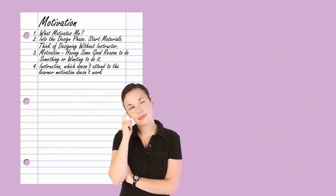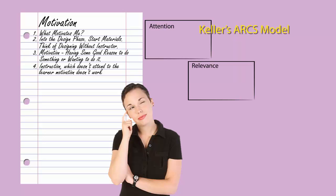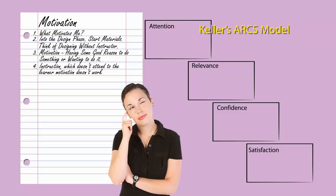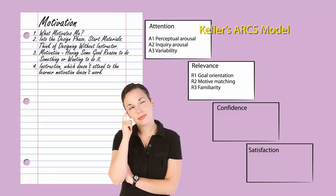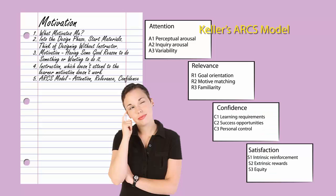When it comes to a system of principles for instructional design that can be used to help the motivational qualities, we can look to John Keller's ARCS model for influencing learners. Keller developed this model in the mid-1980s, and it focuses on four major areas: attention, relevance, confidence, and satisfaction. In 1983, Keller suggested that, as instructional designers, we'll want to produce instruction that is interesting, meaningful, and appropriately challenging. Keller suggests that this can be done in a systematic way, and we'll want to consider the ARCS model as we develop our instruction.